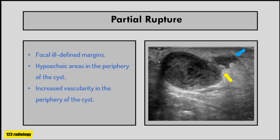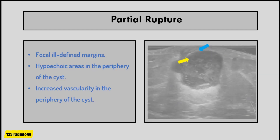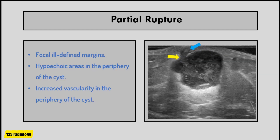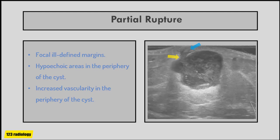Color Doppler examination shows increased blood flow in the periphery of the cyst, frequently low flow. Another case of partial rupture of an epidermoid cyst in the breast: the yellow arrow points to the focal wall disruption and the blue arrow points to the leaked hypoechoic content outside the cyst.